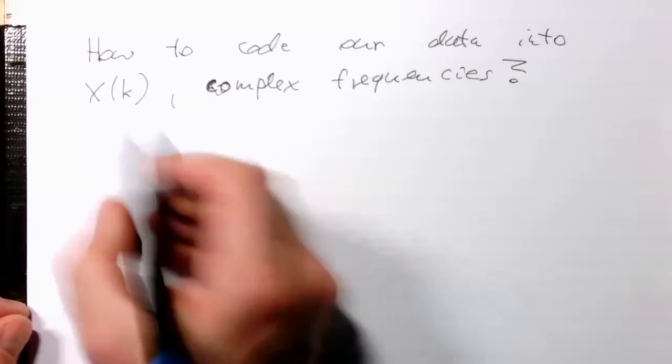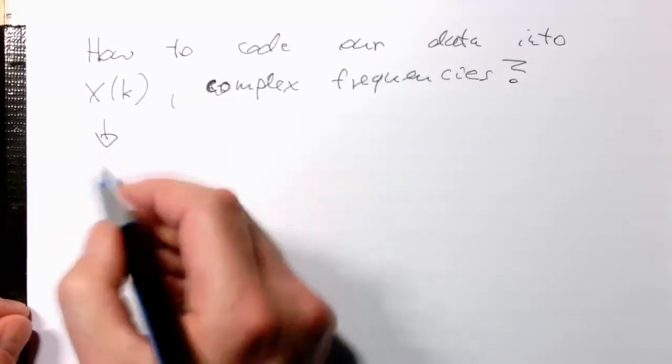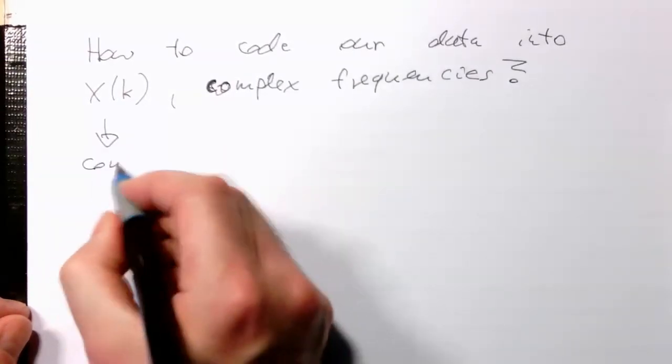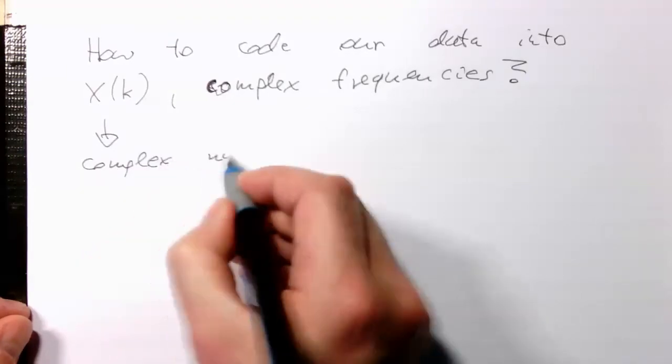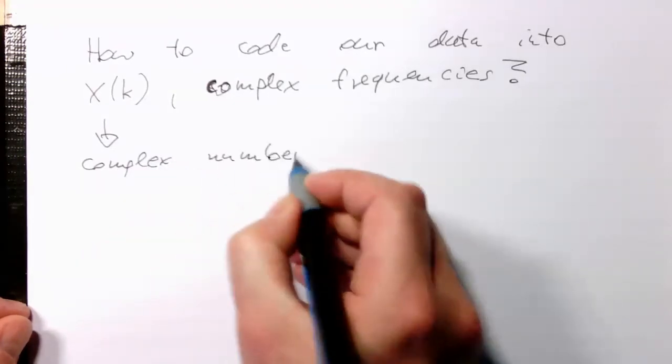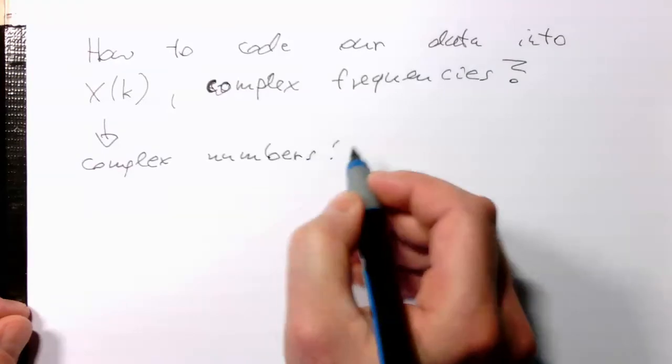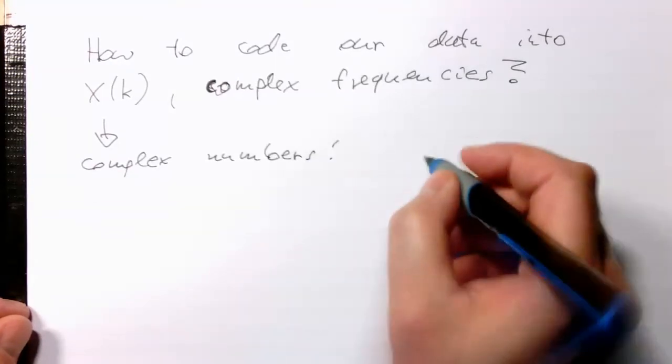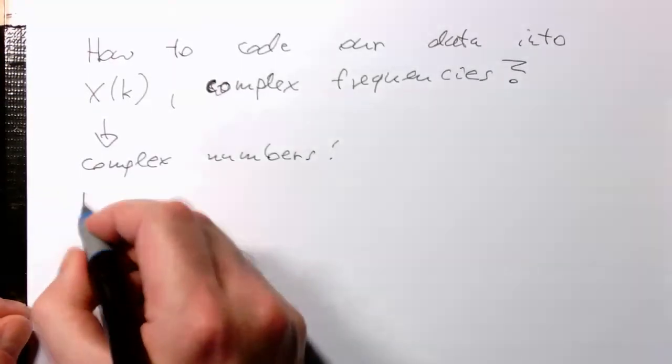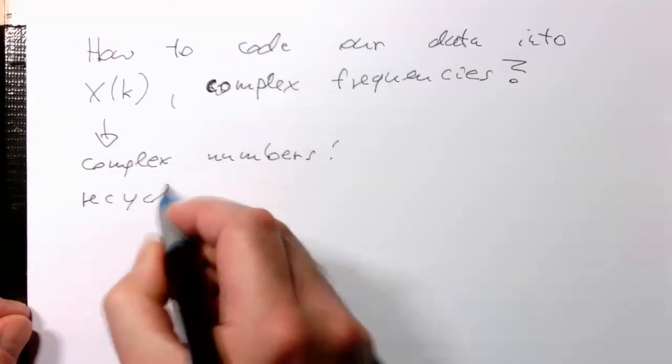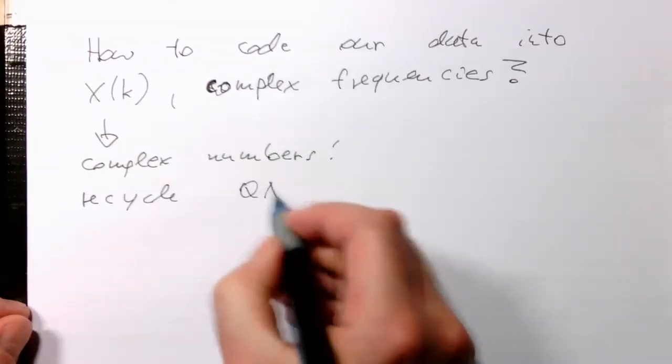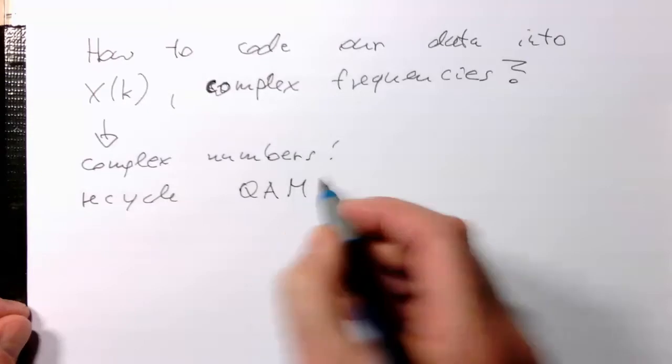So the X(k), these are complex numbers. In other words, we can use, we can recycle Quadrature Amplitude Modulation, recycle QAM.